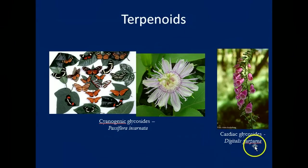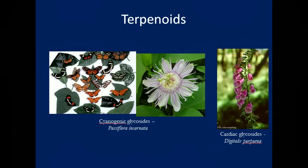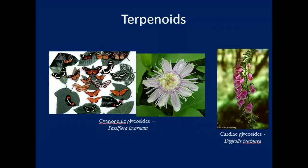Another famous terpenoid is digitoxin, produced by a plant called digitalis, which is actually grown ornamentally on campus, usually near the gym. This plant produces a terpenoid called a cardiac glycoside, which affects the function of the heart — specifically, it causes the heart to slow down and beat harder. For some people this is beneficial, and for others it can be harmful. We'll learn more about digitalis later in the semester.